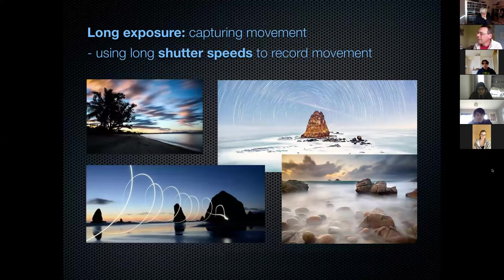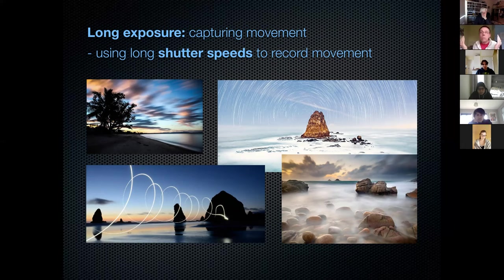Now photography can do things that the naked eye cannot do — that is capture movement. One thing that a camera can do is record movement. A way to do that is to use your shutter, which is the thing inside the camera that opens and closes to let the light in. If we leave the shutter open long enough, it will capture movement. Here are some examples of photographs that capture movement.